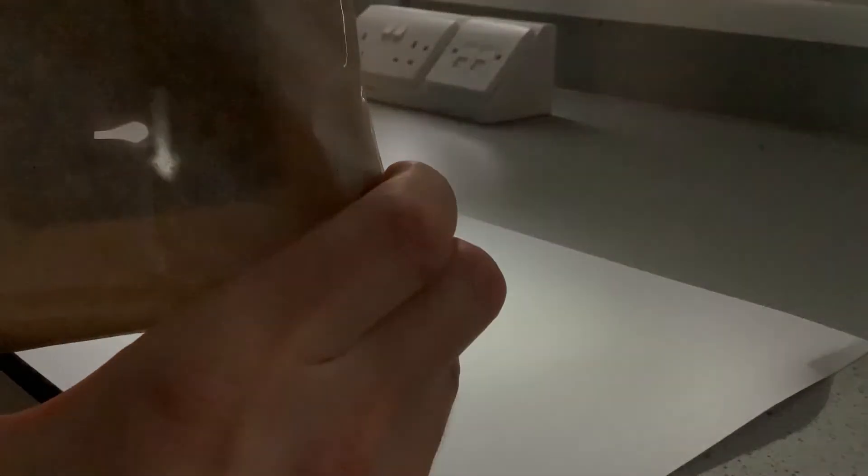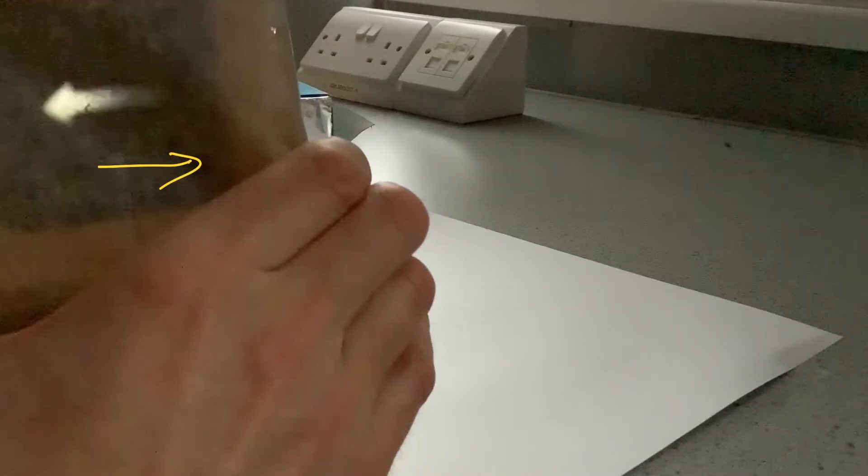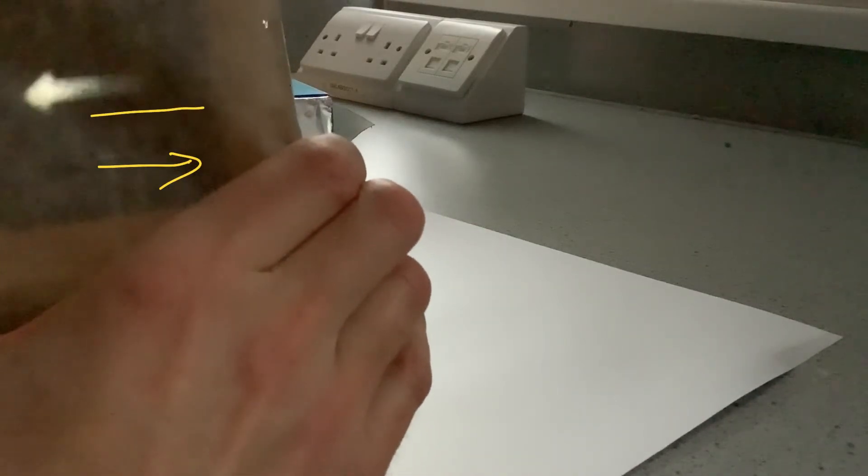If I now lay the arrow on its side, so it's pointing that way, and then look at the image formed, then we can see that the image is pointing in the opposite direction.